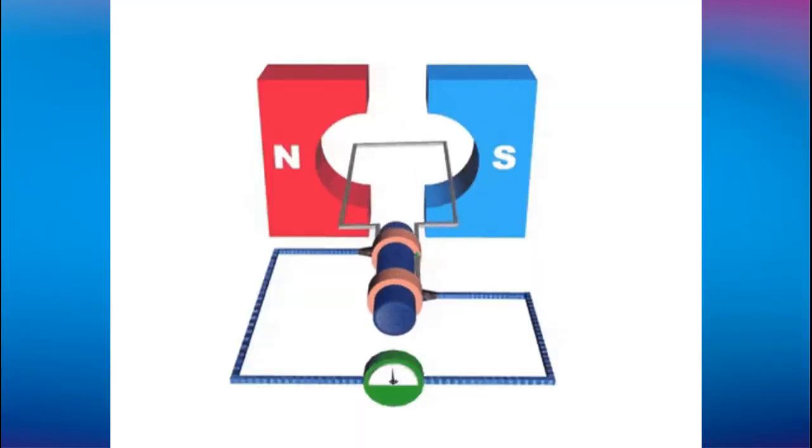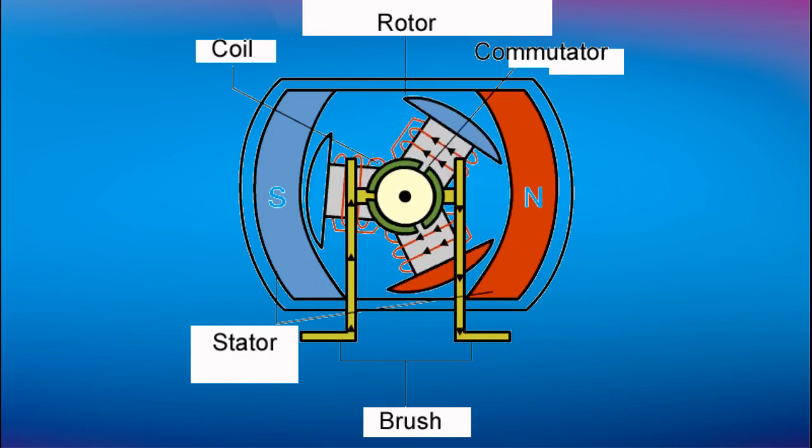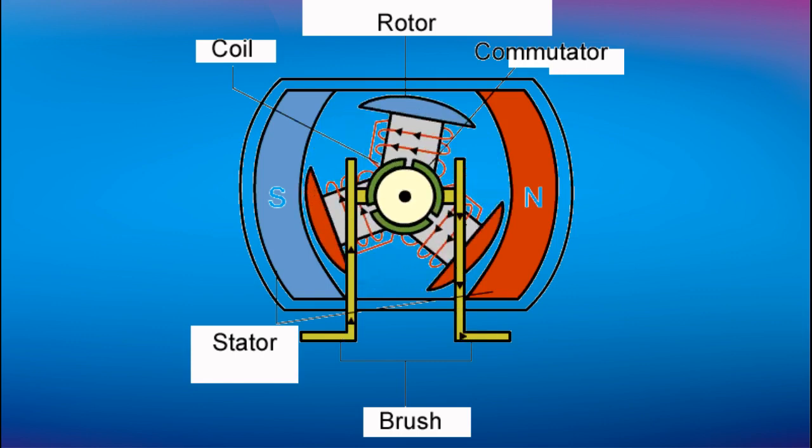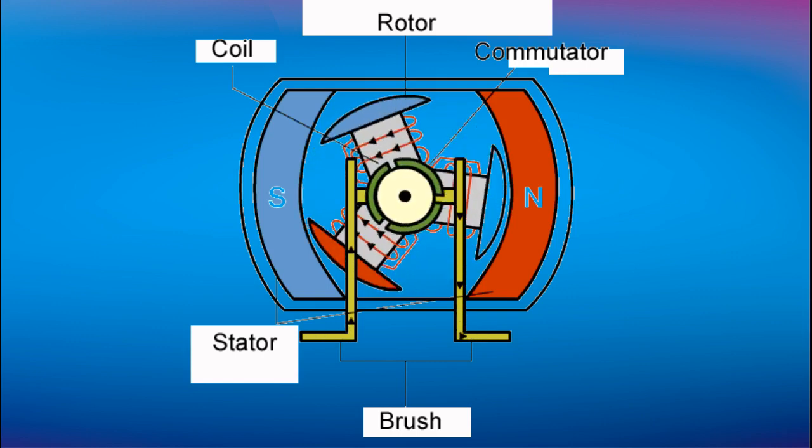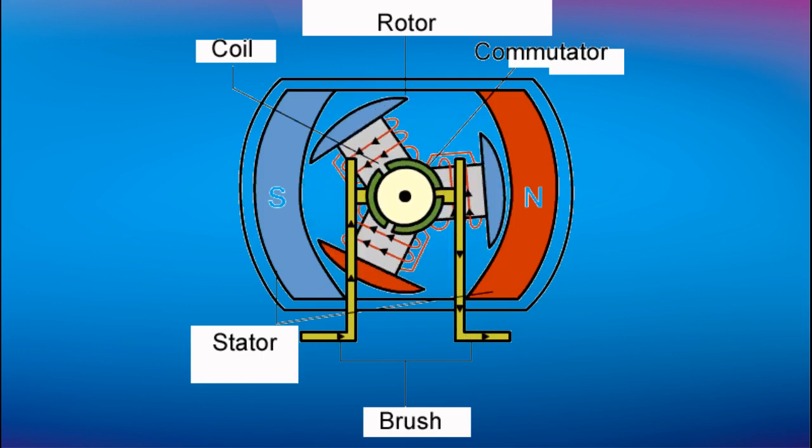Inside an electric motor, these attracting and repelling forces create rotational motion. The outside of a DC motor is the stator, a permanent magnet that does not move. The inside part is the rotor, which does move. The rotor here is like the nail in our previous example, and the stator is like the horseshoe magnet.